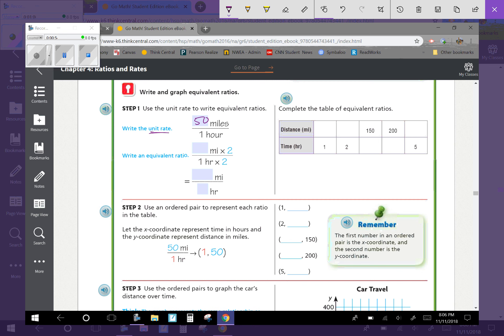Then we're going to write an equivalent ratio. If we take 50 times 2, it's going to be 100, and 1 times 2 is 2. We'll complete the table of equivalent ratios. We know 50 miles for one hour, 100 miles for two hours. We're going up by 1 each time, so it's going to be 3 and 4. 50 times 3 is 150, 50 times 4 is 200, 50 times 5 is 250.